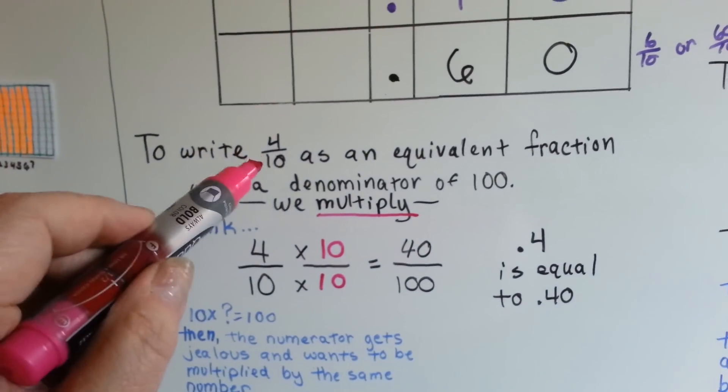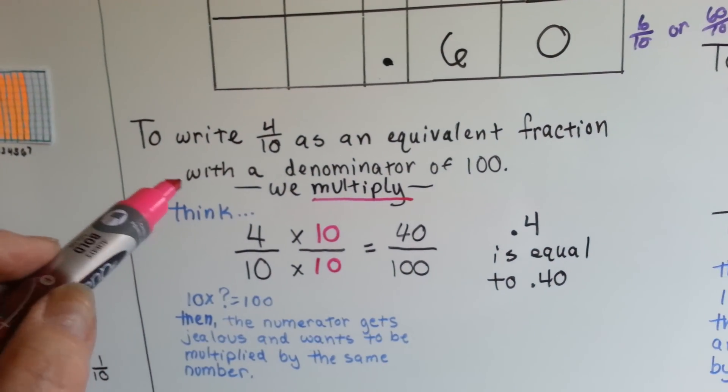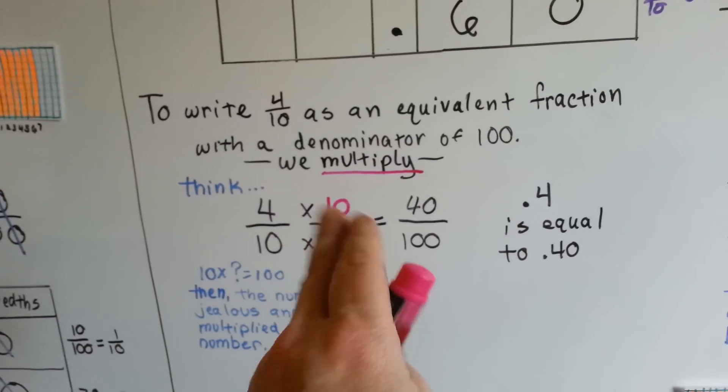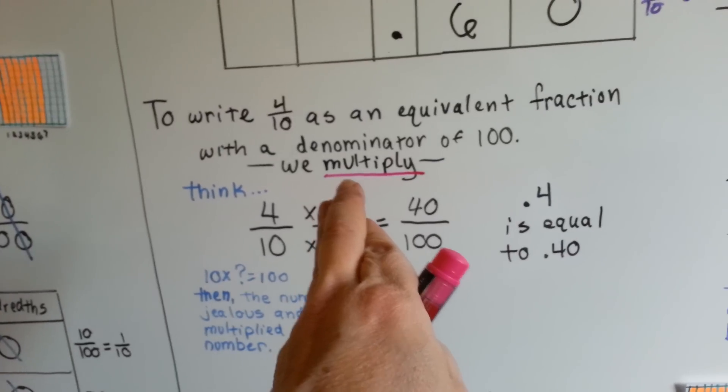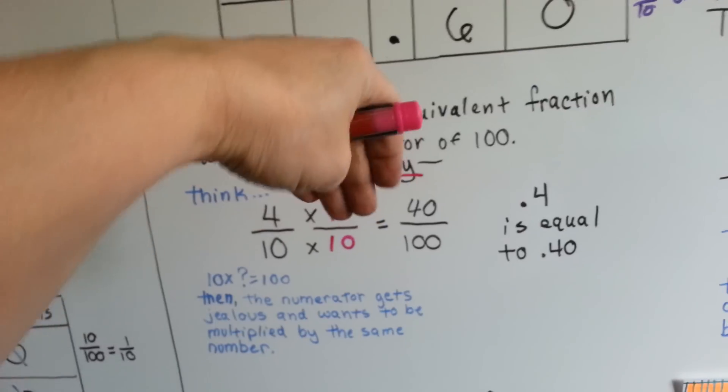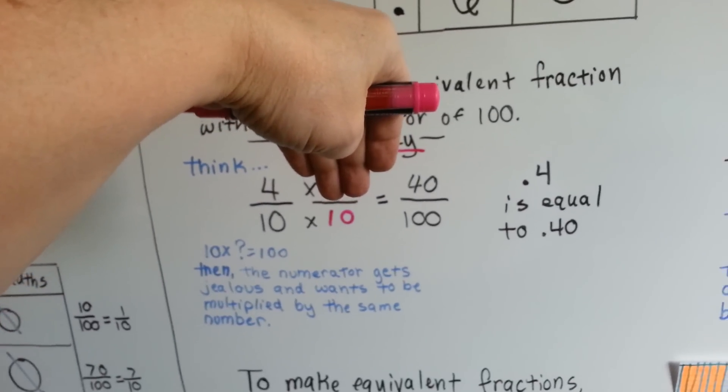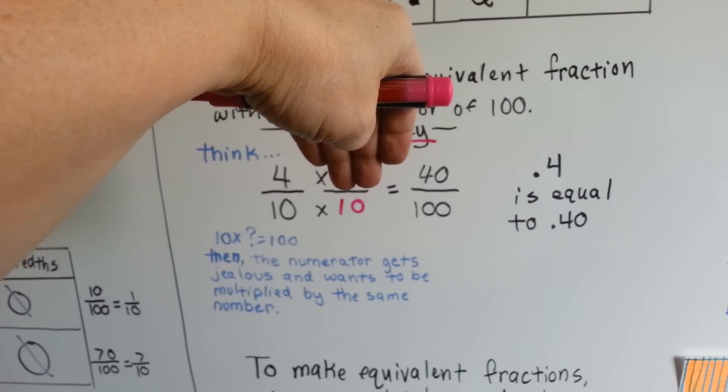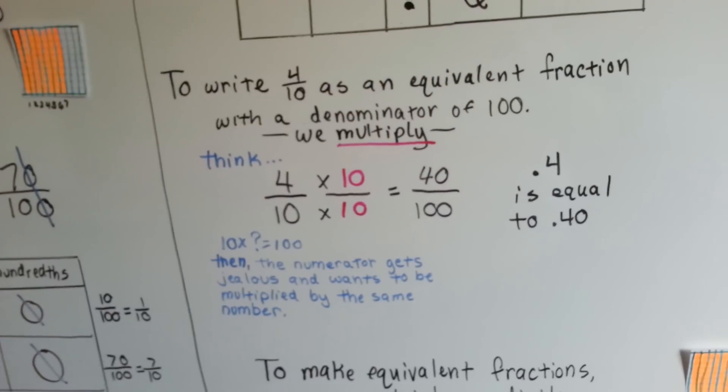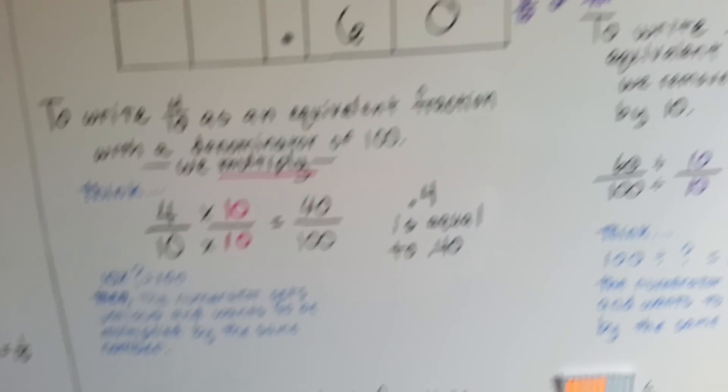To write four tenths as an equivalent fraction with a denominator of a hundred, we multiply. We think, if we don't know what's there, ten times what is equal to a hundred? Ten times ten. Well, the numerator gets jealous and it wants to be multiplied by ten also, so we do. Four times ten is forty.